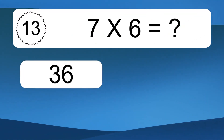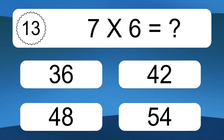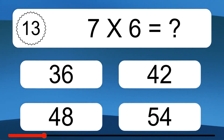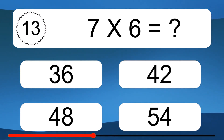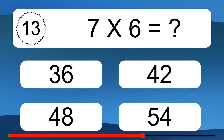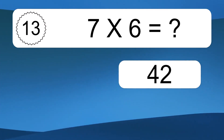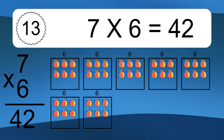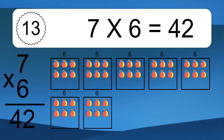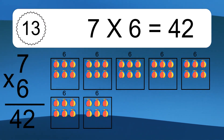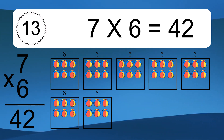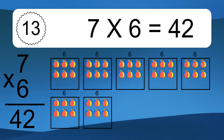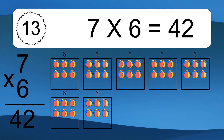7 times 6 equals what? 7 times 6 equals 42. We have 7 boxes, and each box has 6 colorful balls inside. If you count all the balls in all the boxes together, you will have 7 times 6 balls. This equals 42 balls.